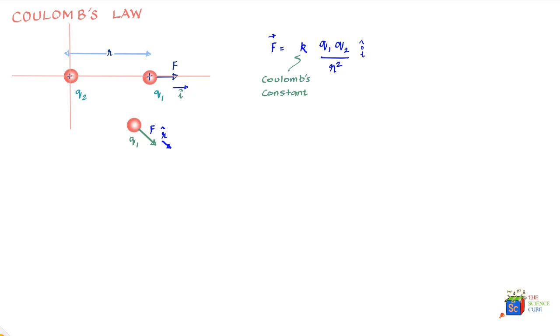Now coming back to Coulomb's constant k, it is often written as 1 / (4π ε₀), and its value is equal to 8.99 × 10⁹ newton meter square per coulomb square. Here ε₀ or epsilon naught is called the permittivity constant and is equal to 8.85 × 10⁻¹² coulomb square per newton meter square.